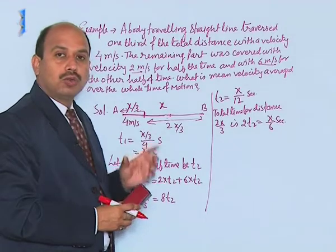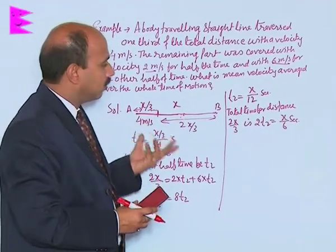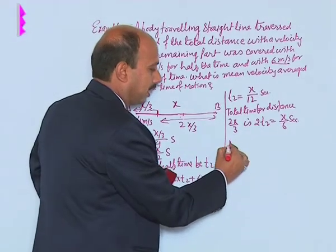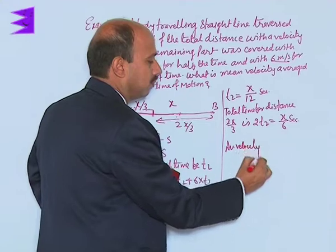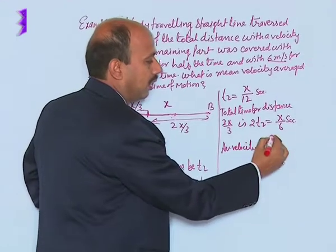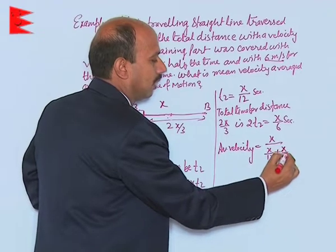So now you have got total time and you know the total distance, so we can get the average speed. So we can write here, average velocity is equal to x divided by x by 12 plus x by 6.